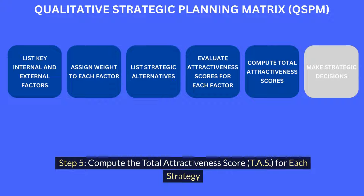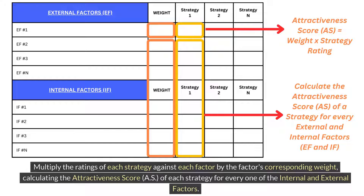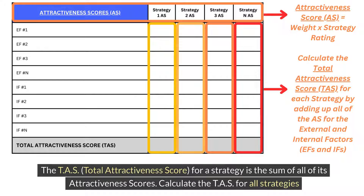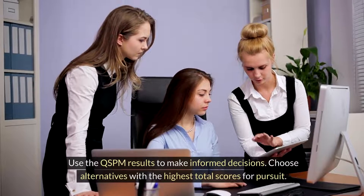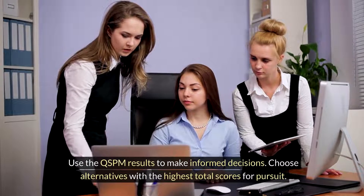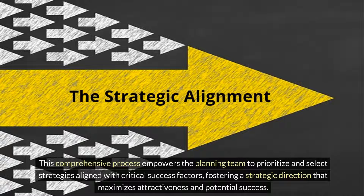Step 5: Compute the Total Attractiveness Score (TAS) for each strategy. Multiply the ratings of each strategy against each factor by the factor's corresponding weight, calculating the Attractiveness Score (AS) of each strategy for every one of the internal and external factors. The TAS for a strategy is the sum of all of its attractiveness scores — calculate the TAS for all strategies. Step 6: Make strategic decisions. Use the QSPM results to make informed decisions. Choose alternatives with the highest total scores for pursuit. This comprehensive process empowers the planning team to prioritize and select strategies aligned with critical success factors, fostering a strategic direction that maximizes attractiveness and potential success.